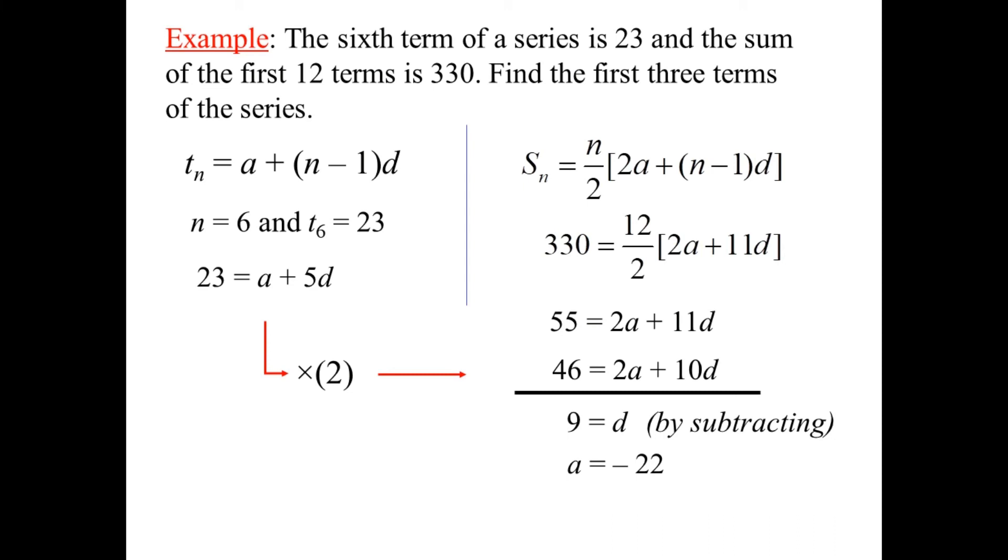And this leads to a equals negative 22. From where? Take d equals 9. Plug it in here. 9 times 5 is 45. Drag it over here. 23 minus 45 is minus 22. So a equals minus 22. From here. And so we have our terms. T sub 1, the first term, a. T sub 2, go add 9, add a d. So negative 22 plus 9 is this minus 13. And negative 13 plus 9 is this minus 4. And we found the first three terms of the series.